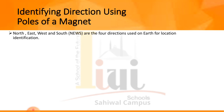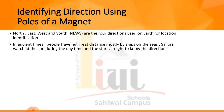In ancient times, people traveled great distances mostly by ships on the seas. Sailors used the sun during the daytime and stars at night to know their direction. So sailors watched the sun during the day and the stars at night to determine direction.